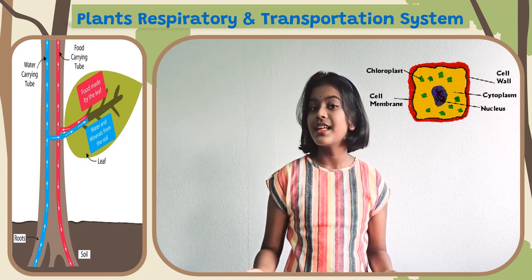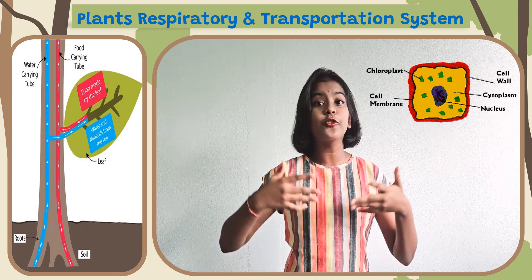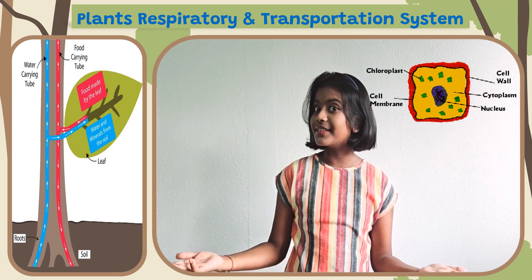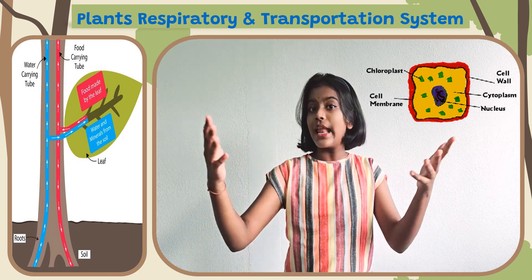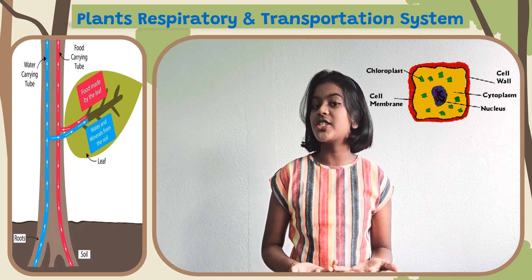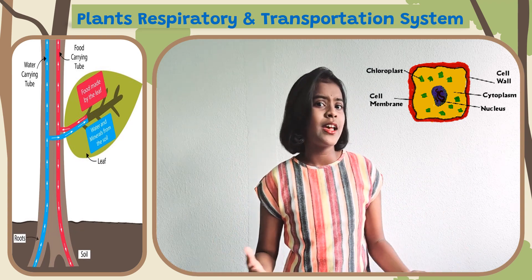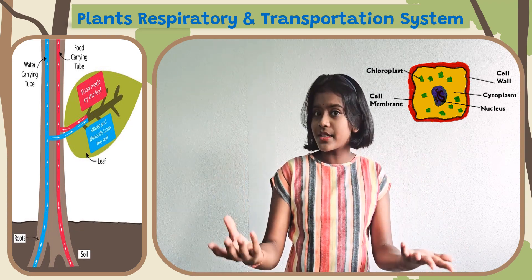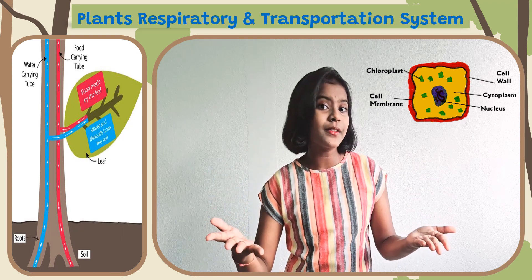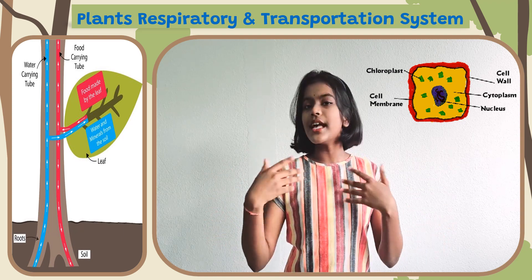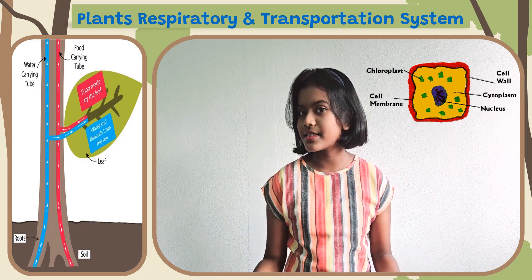Chloroplast traps sunlight to make food for the plant. Cell wall gives the plant cell its shape. Cell membrane is where all substances go in and out. Cytoplasm is where all activities take place.